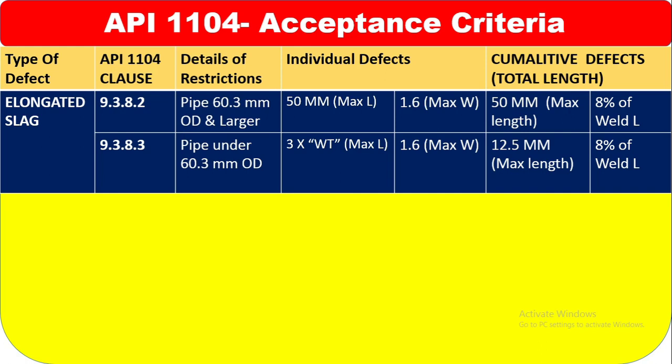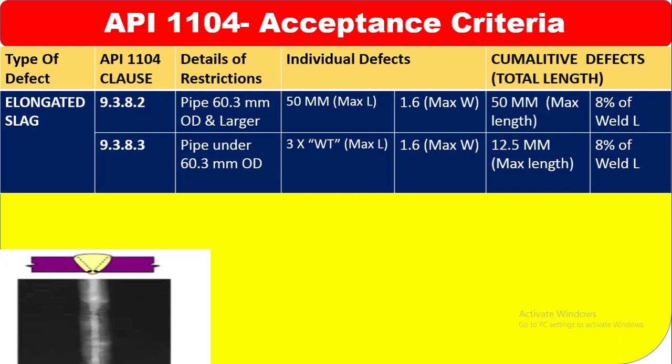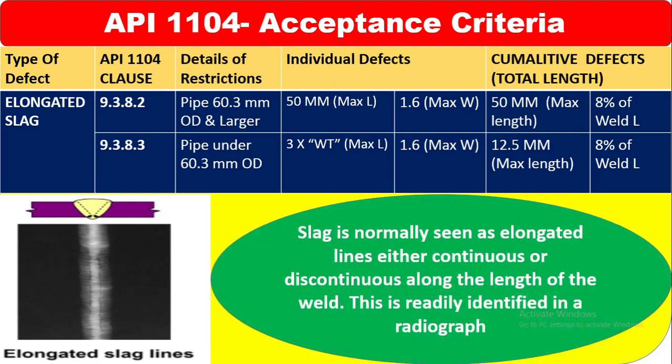For cumulative defects in clause 9.3.8.3, the maximum length is 12.5 mm, and also 8% of the weld length. Elongated slag line is normally seen as either continuous or discontinuous along the length of the weld. This is readily identified in the radiograph — you can see here the elongated slag line along the root.